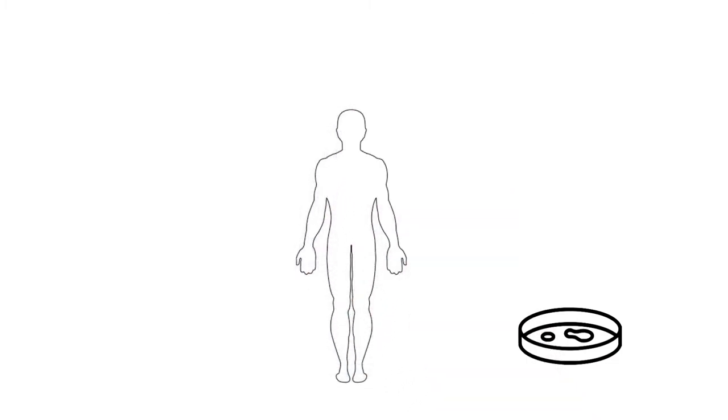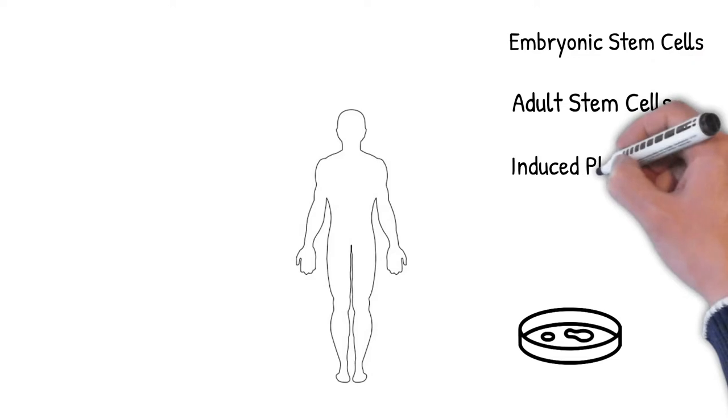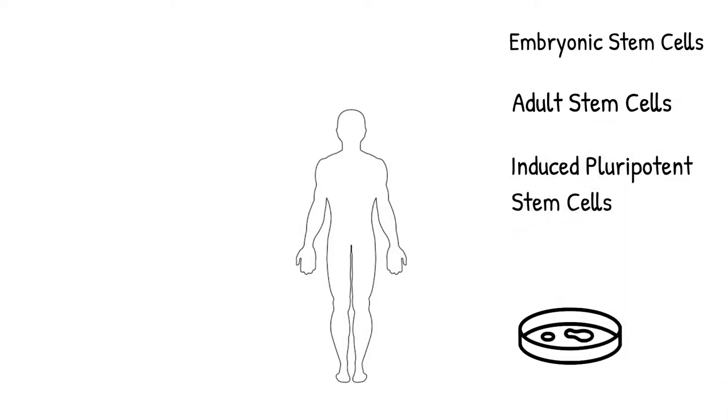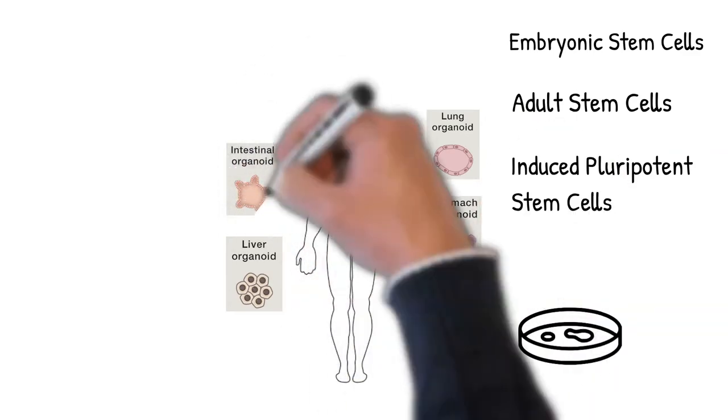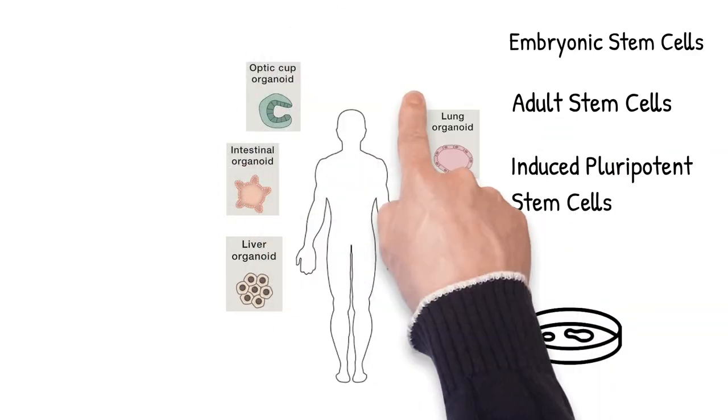These mini-organs can be created from either embryonic stem cells, adult stem cells, or induced pluripotent stem cells made from patient tissue samples. Organoid models can represent all kinds of human organs: heart, liver, kidney, lung, stomach, eyes, skin, bone, brain, and many others.